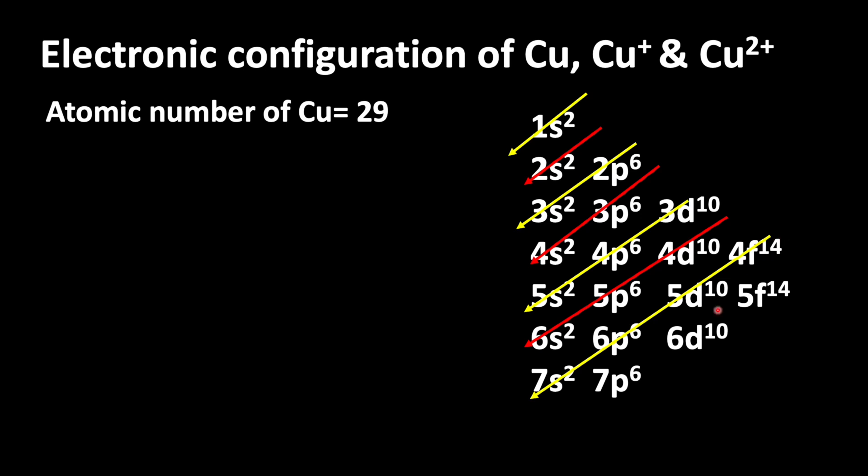From this, let us write the electronic configuration: 1s2 2s2 2p6 3s2 3p6, then electron enters into 4s orbital: 4s2, then 3d9. If you count all the electrons you will get the number of electrons available in copper, that is 29.